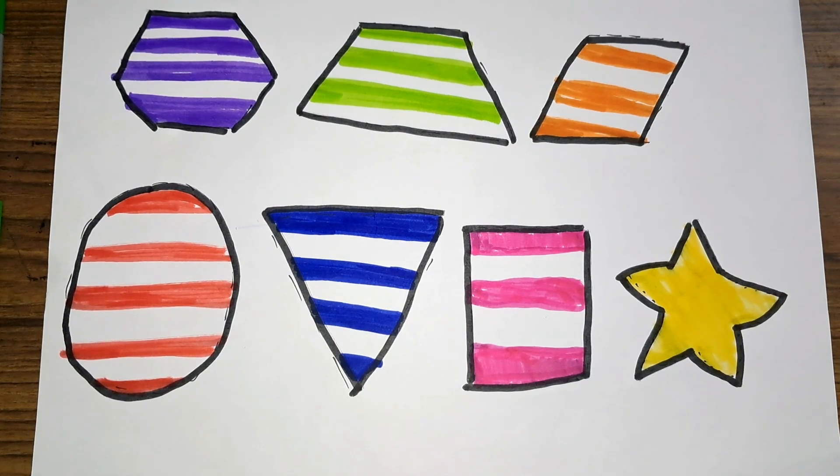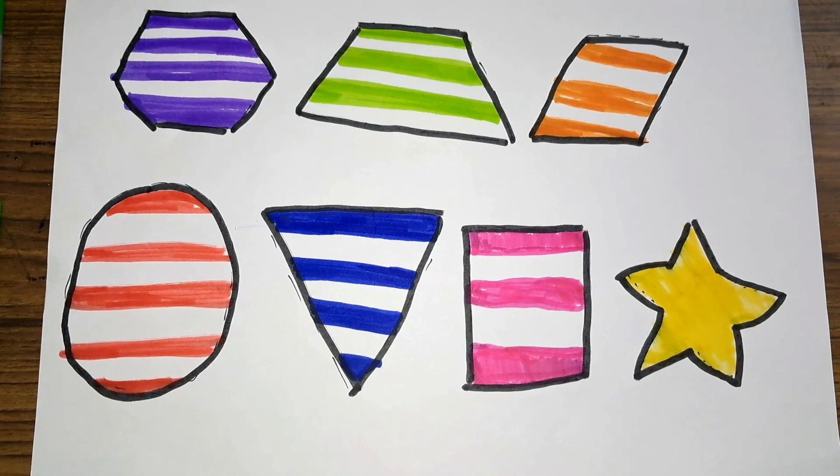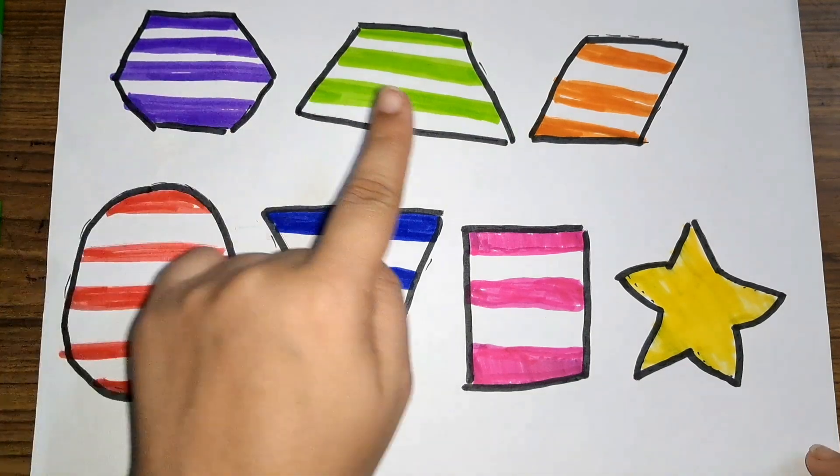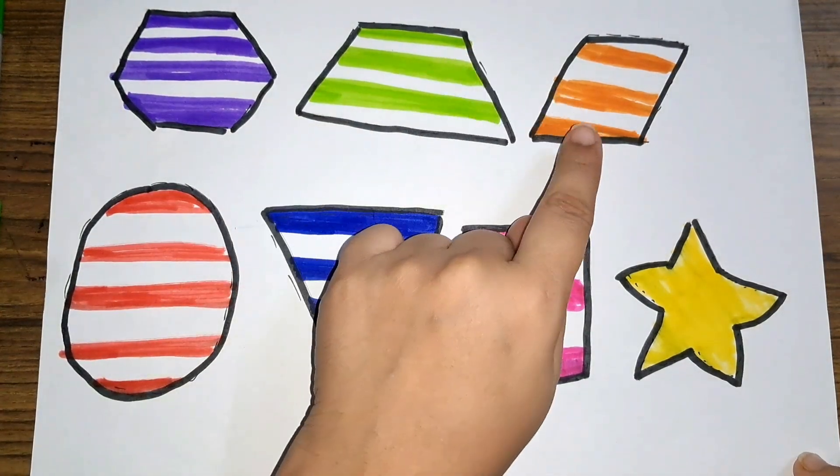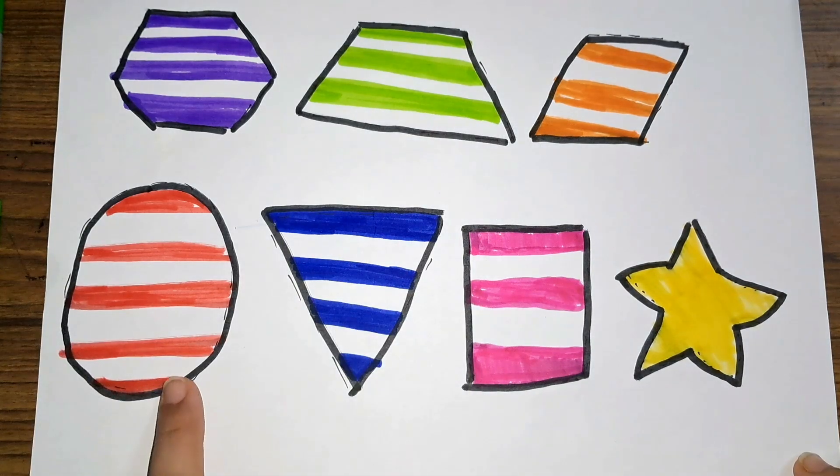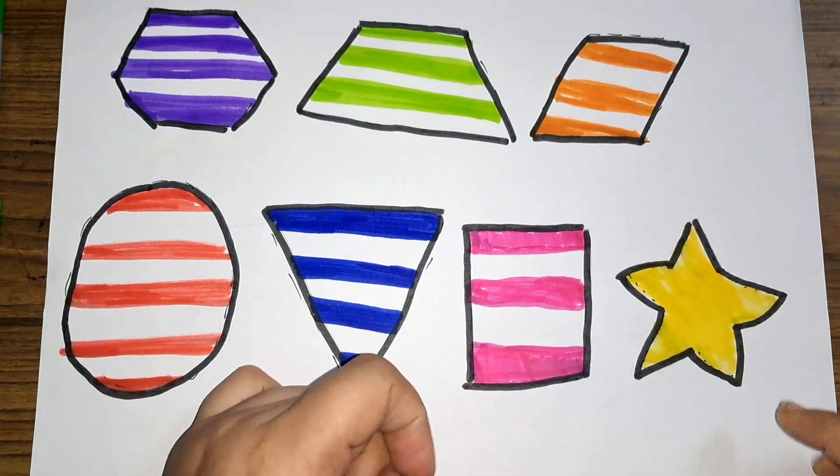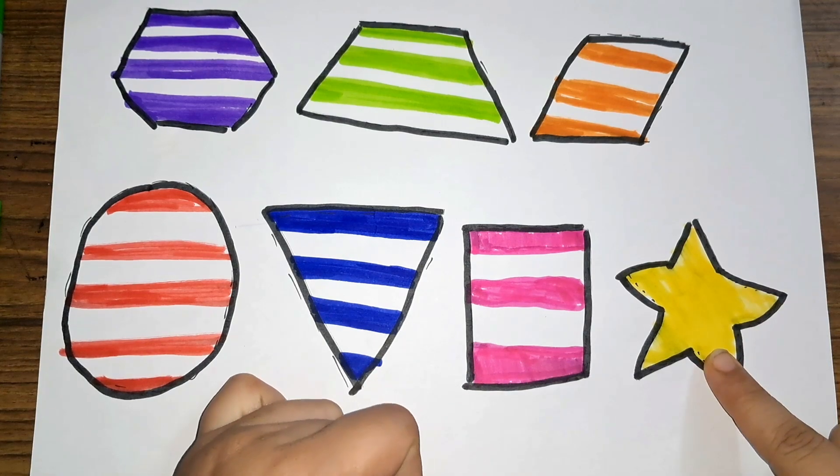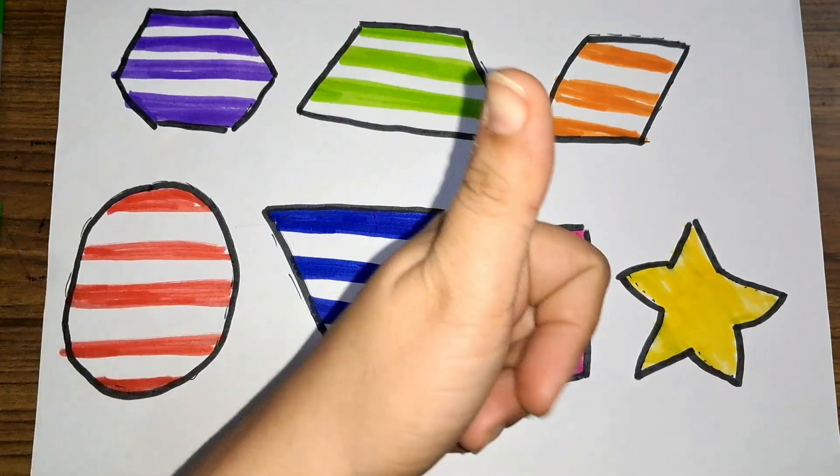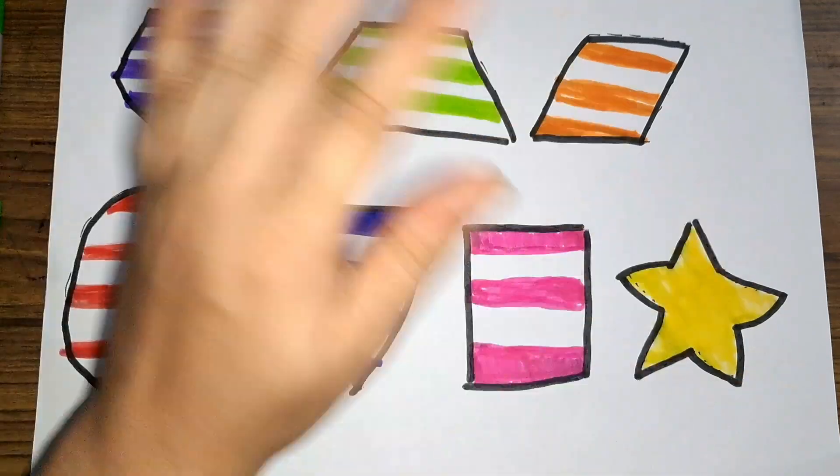Let us see the shapes one more time: hexagon, trapezium, rhombus, circle, triangle, square, and star. Give a like and subscribe. Bye.